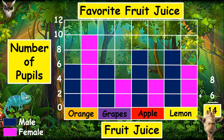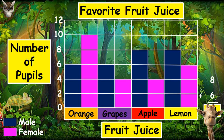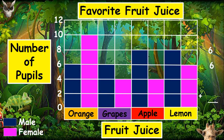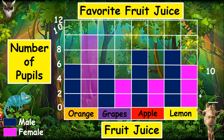The blue bars represent the number of males while the pink bars represent the number of females. The blue bars indicate: 6 males like orange, 6 like grapes, 8 like apples, and 8 like lemon — a total of 28 males. The pink bars indicate: 10 females like orange, 4 like grapes, and 4 like apple.